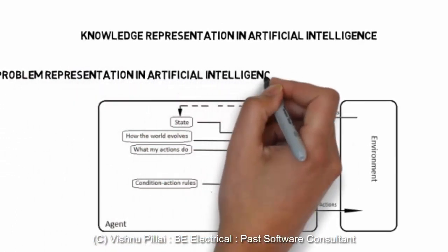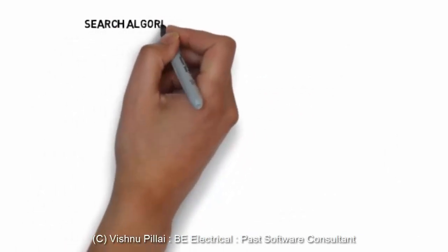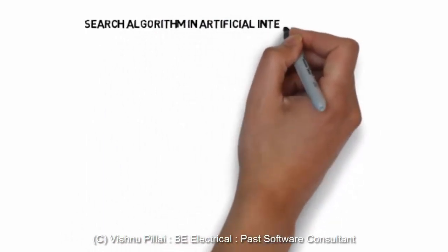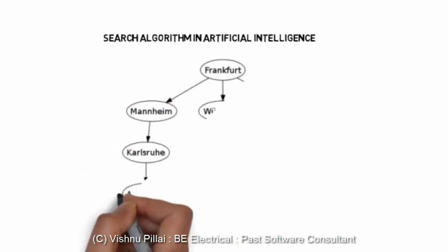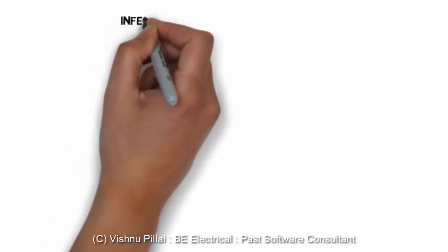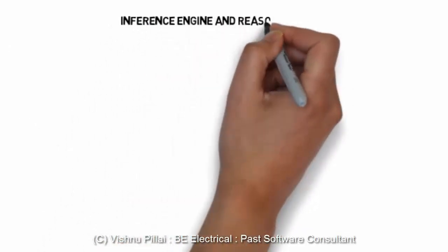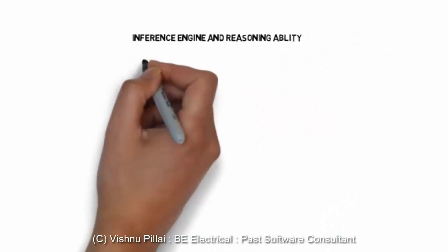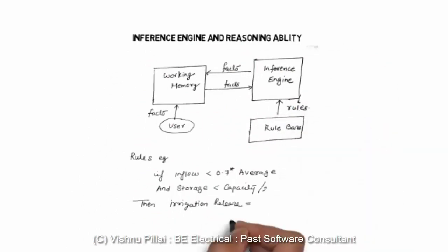Knowledge representation and problem representation is about ensuring the AI system has the right knowledge. For example, a fire alarm system should have all the knowledge related to how it should operate — such as detecting fire or smoke via sensors. Such knowledge can be fed into the system using knowledge representation techniques. To retrieve information stored in the knowledge base, you need certain methods such as semantic graphs, search algorithms, frames, and if-then rules to represent and fetch that information.